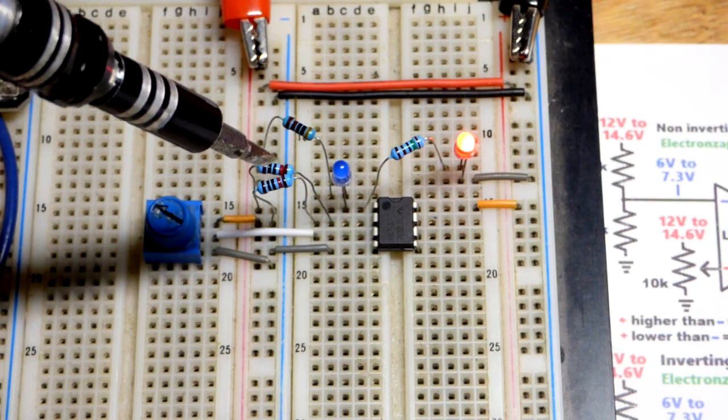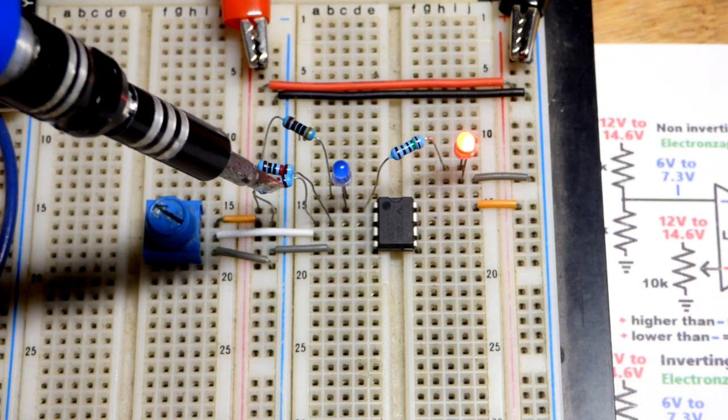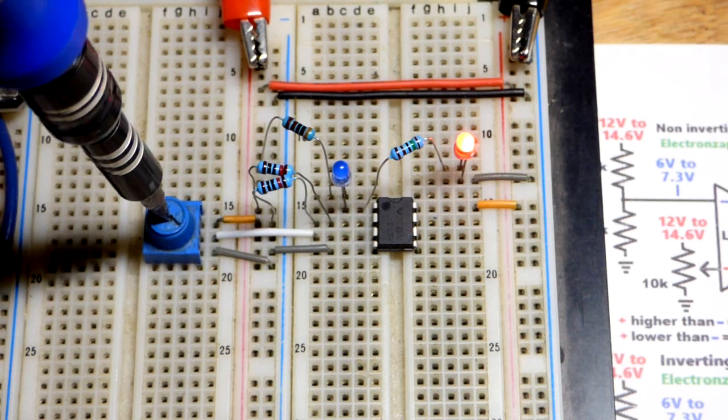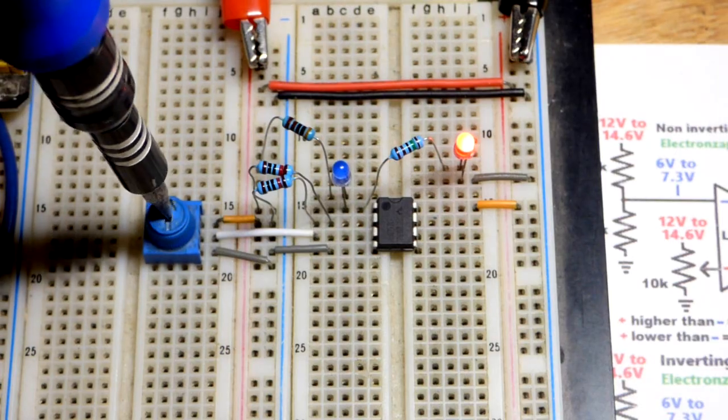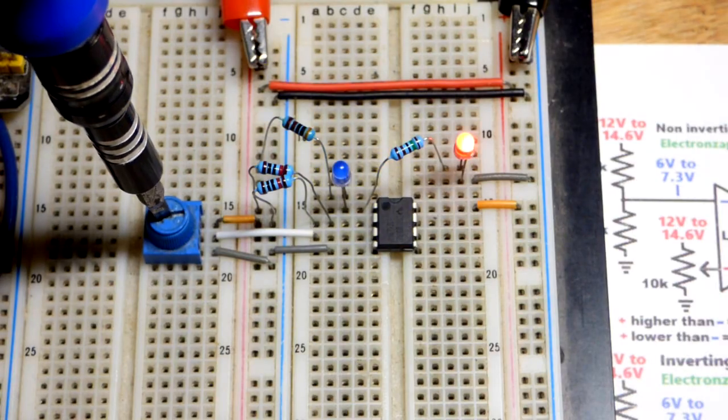I'm using 10k resistors, two of them, so there's 20,000 ohms total for this voltage divider. It's fixed though, we got half and then half.